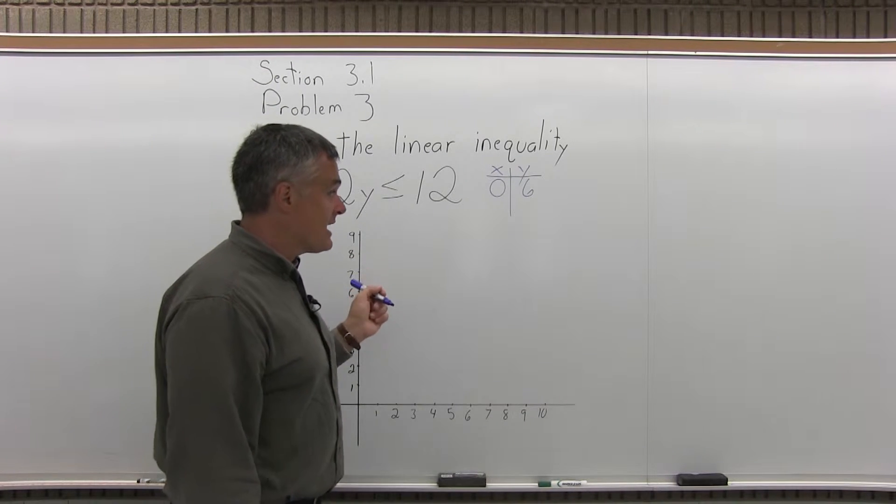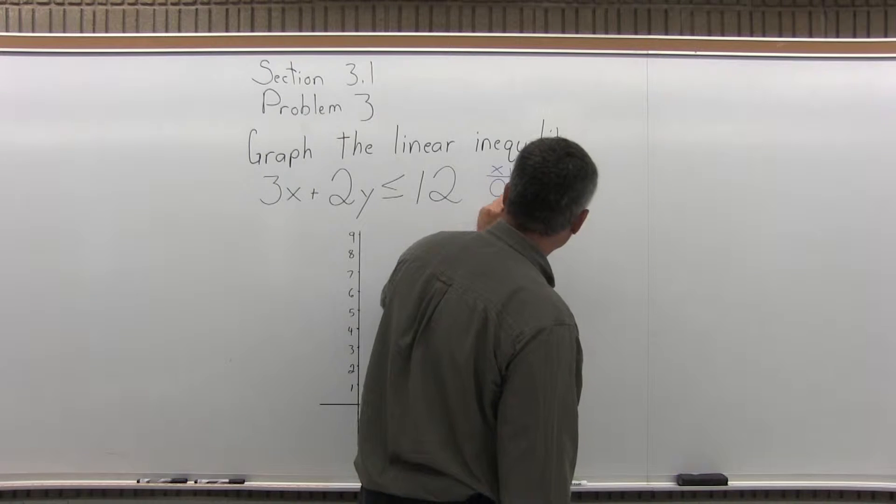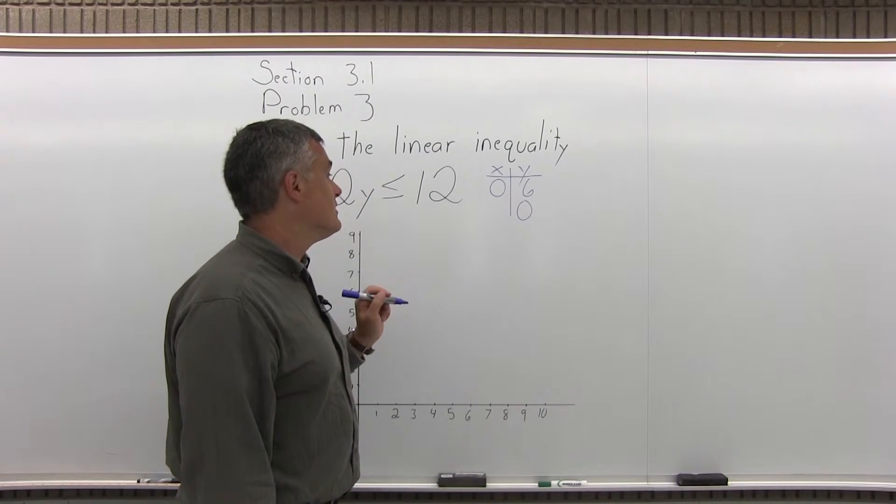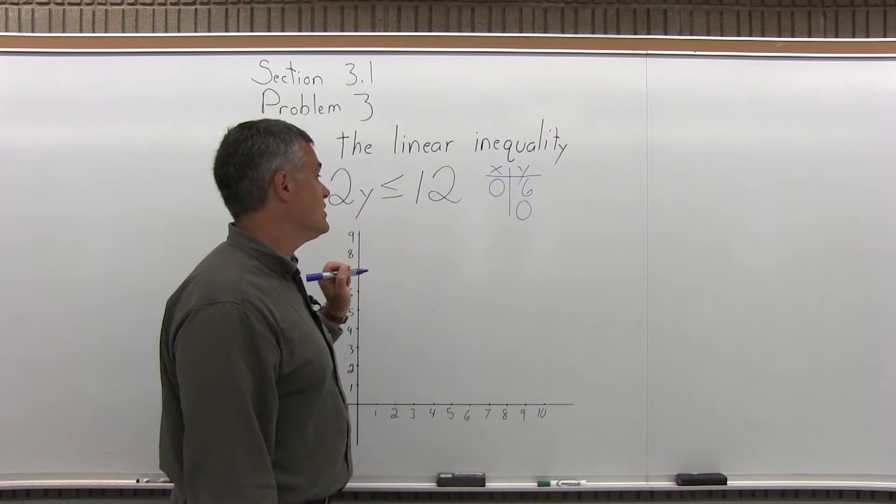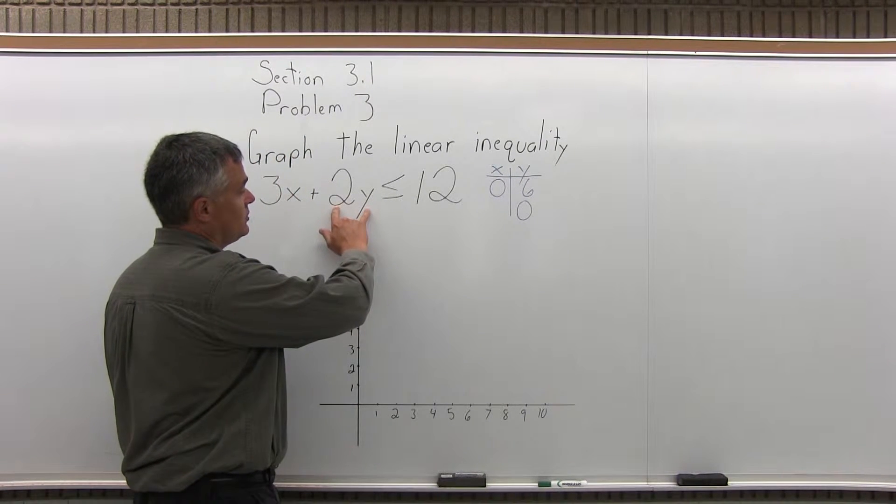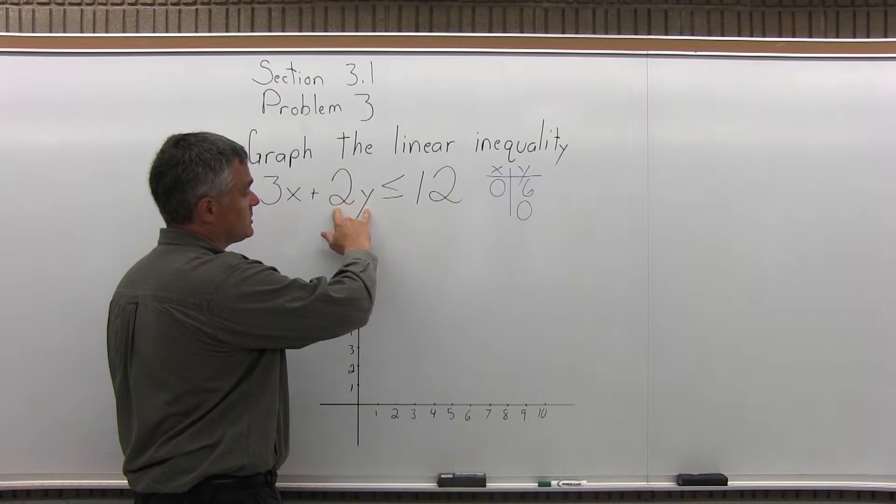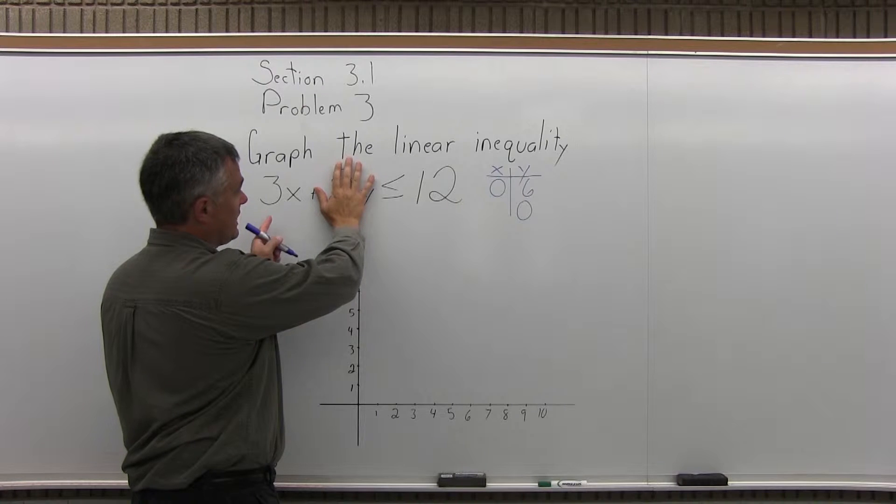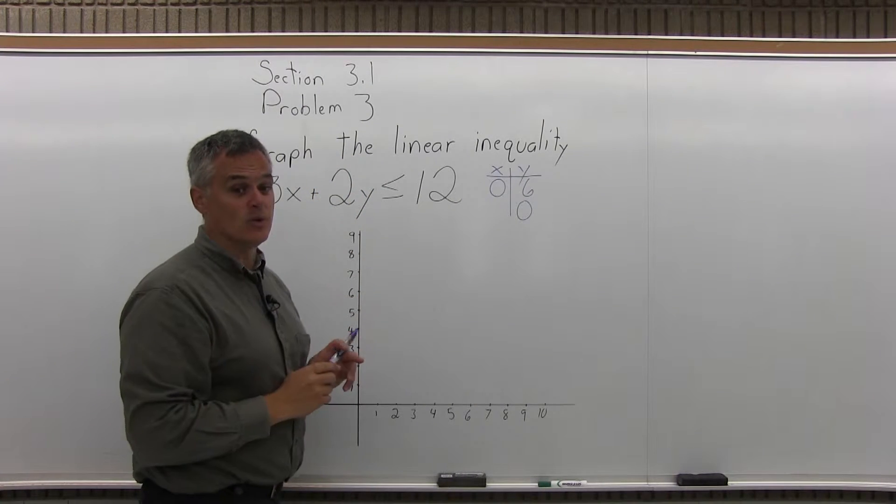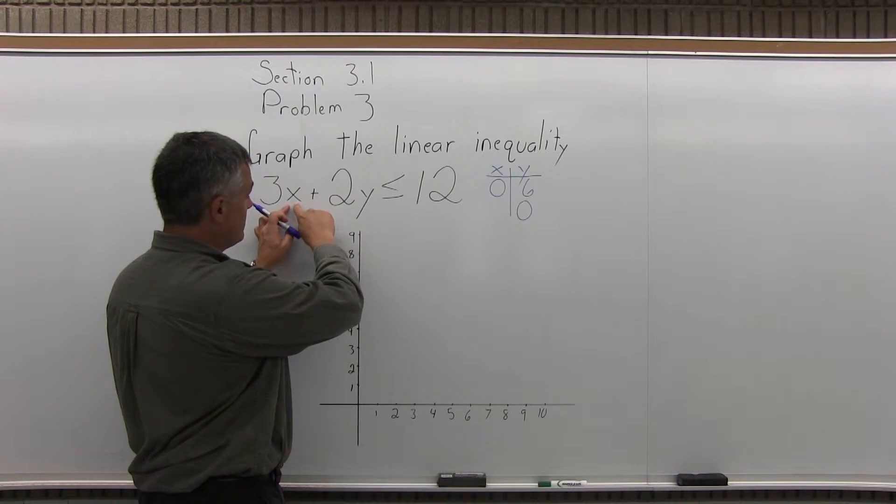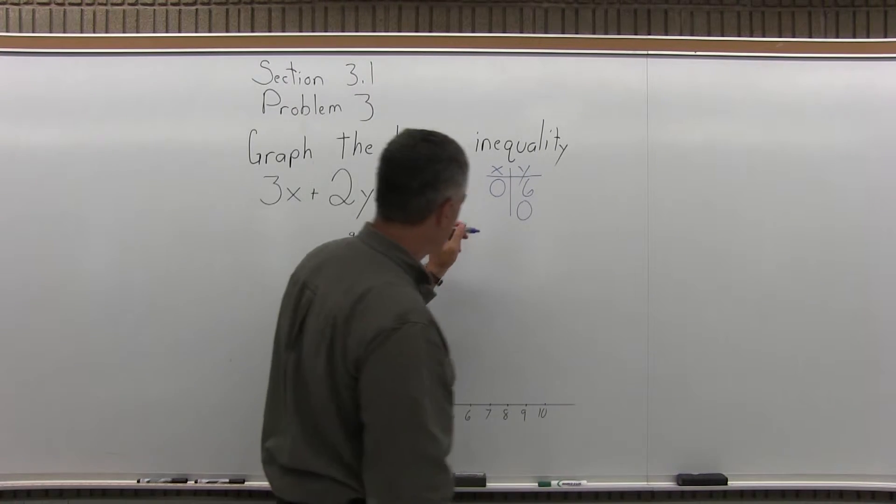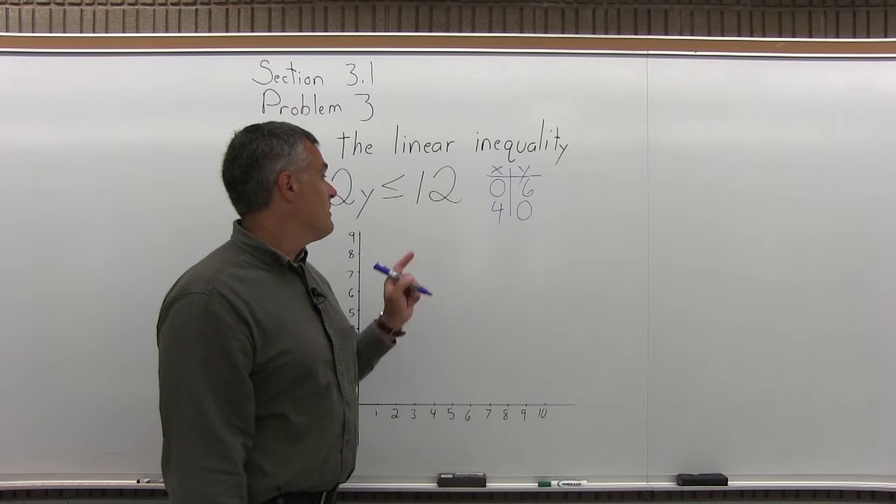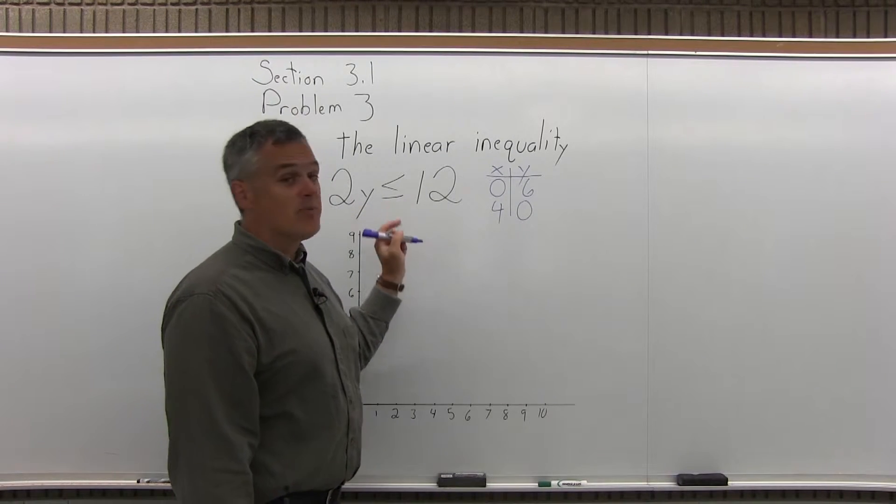Now to find the second point, next I will let y equal zero and see what value of x I need to make this true if I pretend it's an equation. So if y is zero, the 2y in my linear inequality becomes 2 times zero and it would basically just go away. And because I'm pretending it's an equation, I have 3x equals 12. And if 3x equals 12, x must be 4. 3 times 4 would make 12 equals 12. So I have 2 points that would make my linear inequality true if I pretend it's an equation.